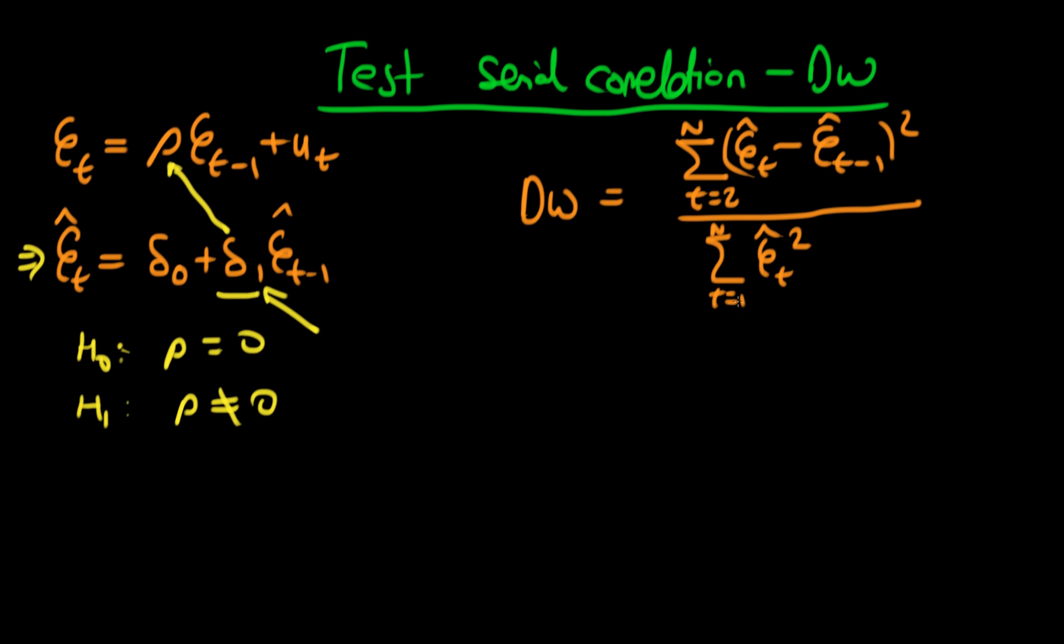One way in which it's different is that the bottom here would in fact be the sum of t equals 2 to n of et-1 all squared, which isn't actually that different if I have a very large sample, because whether I include that first error or don't, it's not going to make that big a deal. But perhaps it makes more of a deal in smaller sample sizes.